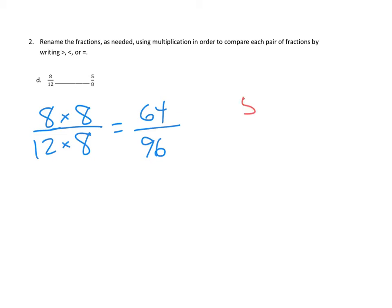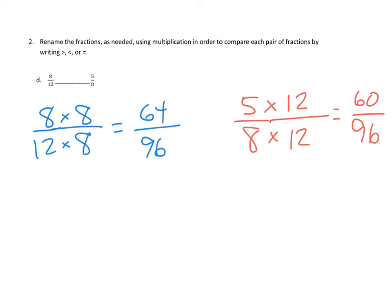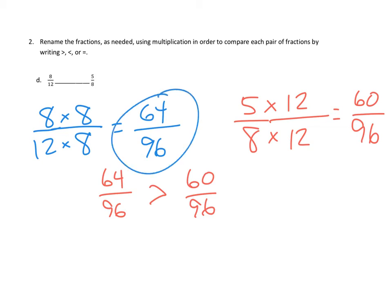We're going to do the same thing with 5 eighths. We multiply 5 eighths by 12: 5 times 12 is 60, and 8 times 12 is 96 — that's the same denominator. So now we're comparing 64 ninety-sixths with 60 ninety-sixths. Our units are the same, and we have a few more on this side, so 64 ninety-sixths is greater than 60 ninety-sixths, and thus 8 twelfths is greater than 5 eighths.